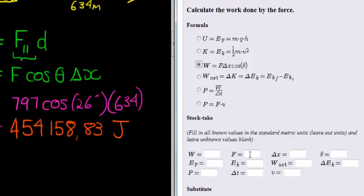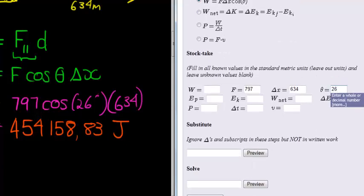We know that our force was 797 newtons. Our displacement or our change in the horizontal direction is 634 meters. Our angle between these two was 26 degrees, and then we can substitute.